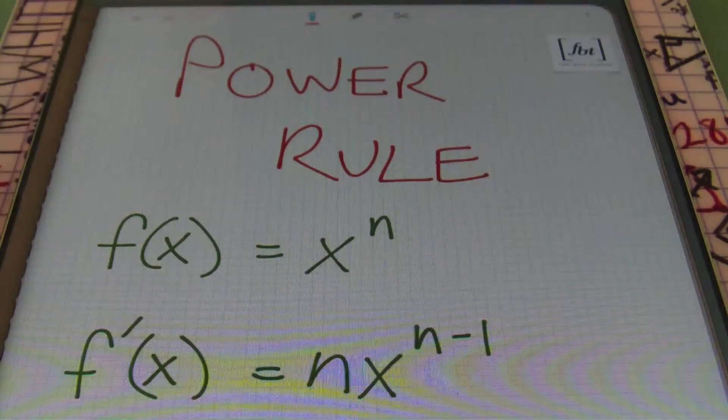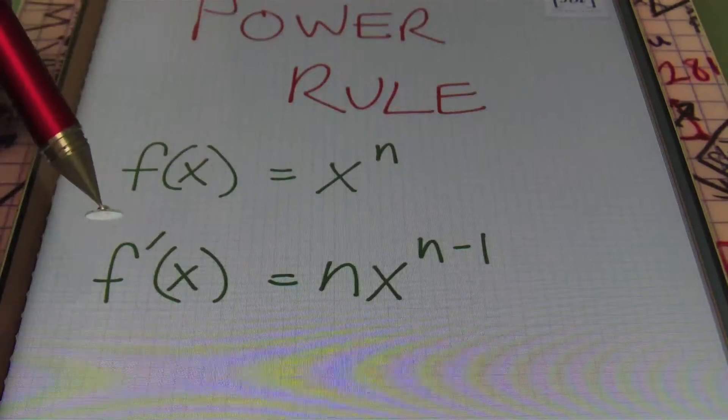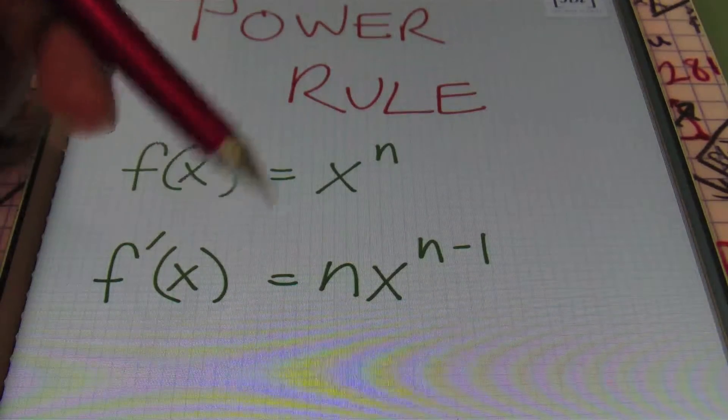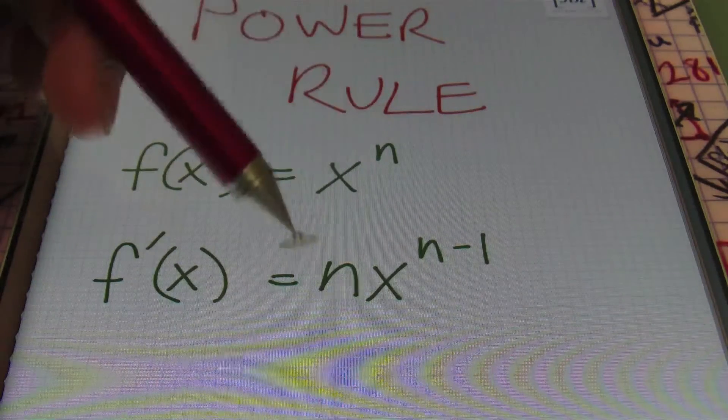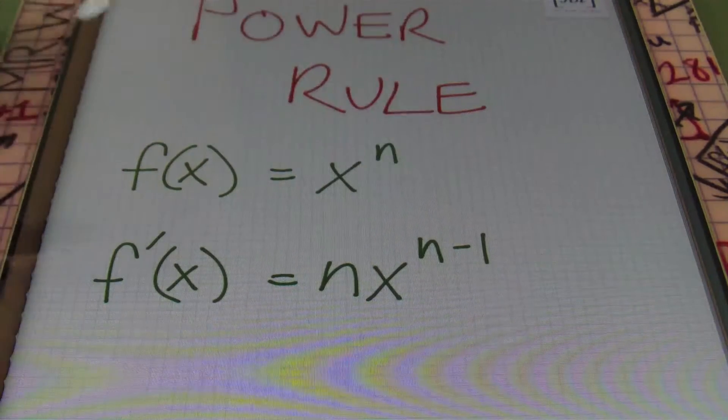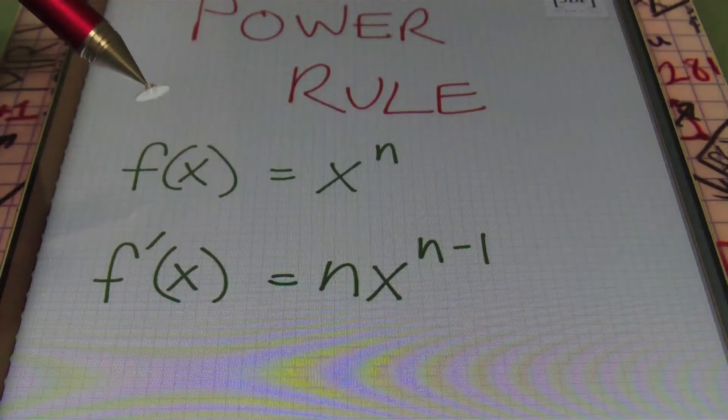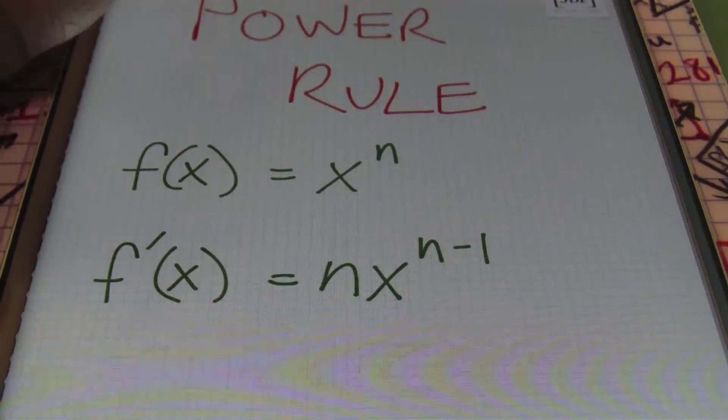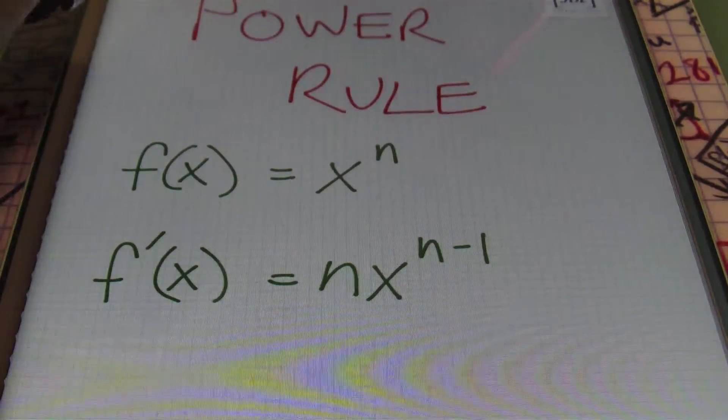So here the power rule I have before you. In order to find the first derivative, your f prime of x will be equal to your original terms exponent n times your variable raised to that original exponent minus one. That's it, it's pretty easy, I like the power rule. So let's look at a few examples, ladies and gentlemen, let's check it out.